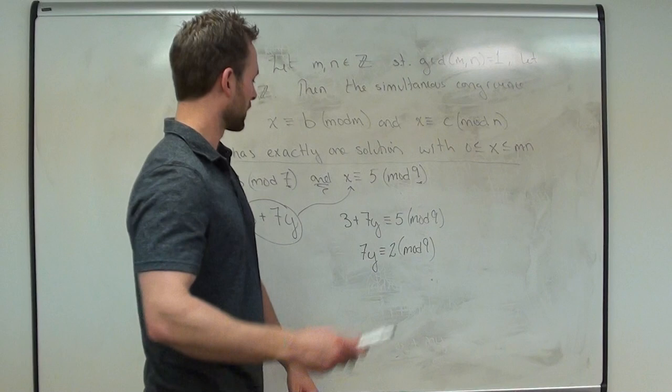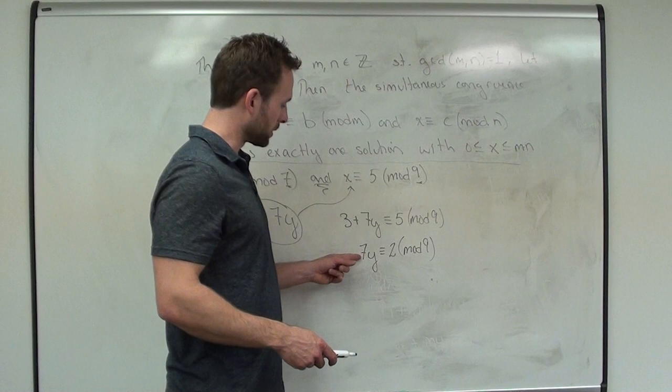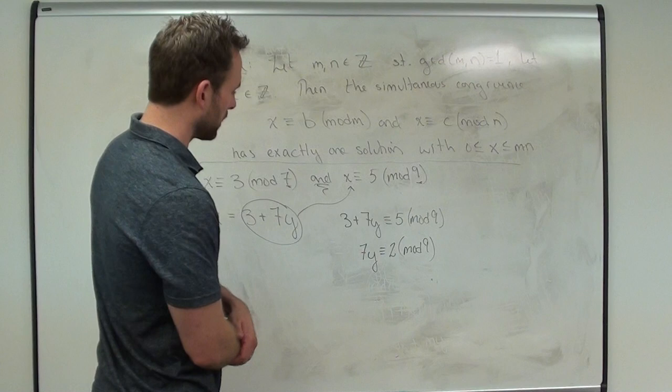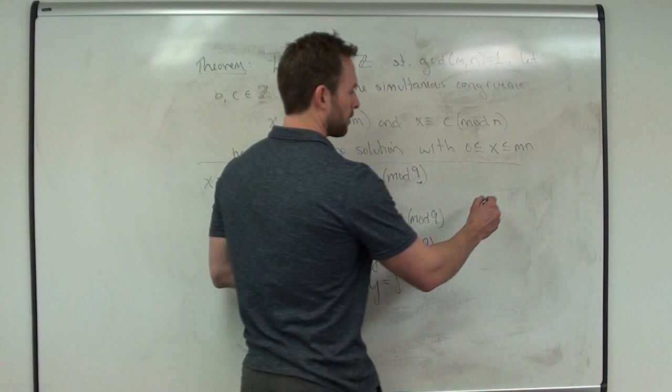But with something small like this, I call it the caveman method — just keep plugging in values. Because when it's mod 9, all we need to do is plug in 0 through 8. Plug in 0, you get 0 — doesn't work. Plug in 1: 7 is not 2. Plug in 2: 14 mod 9 is 5 — doesn't work. Keep going, and y equals 8 works: 8 times 7 is 56, and 56 mod 9 — 9 goes in 6 times, that's 54, remainder 2 — which is what we want.